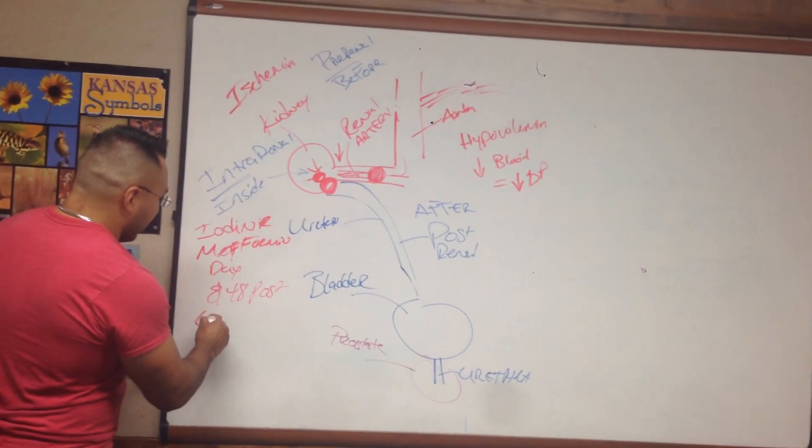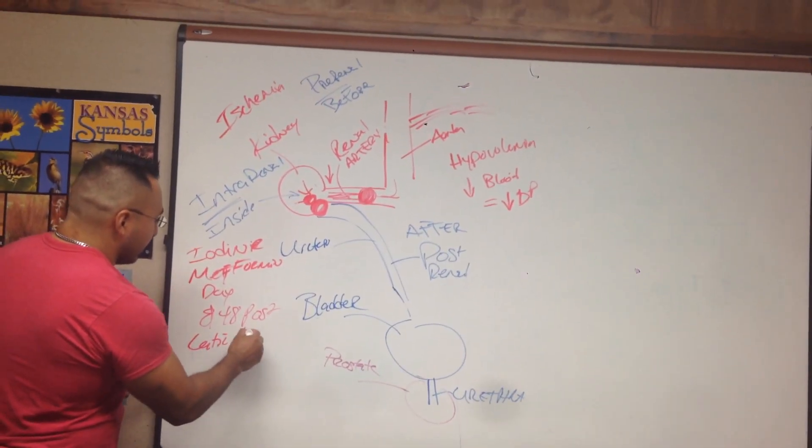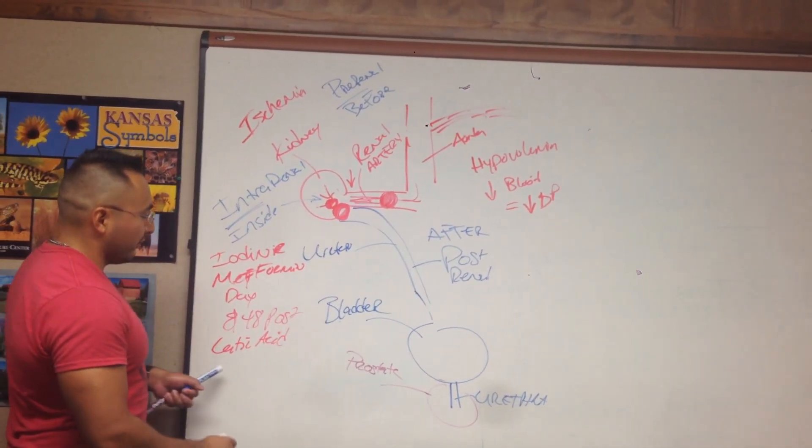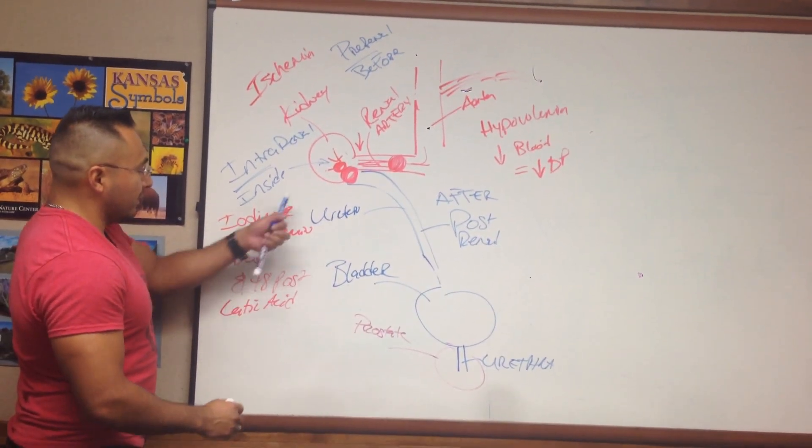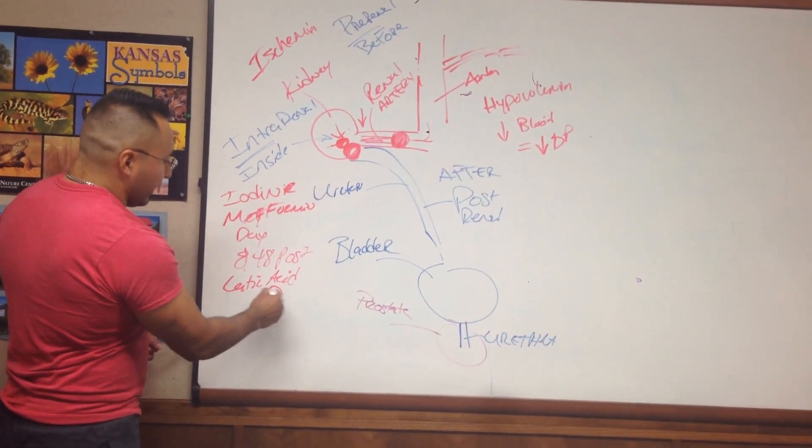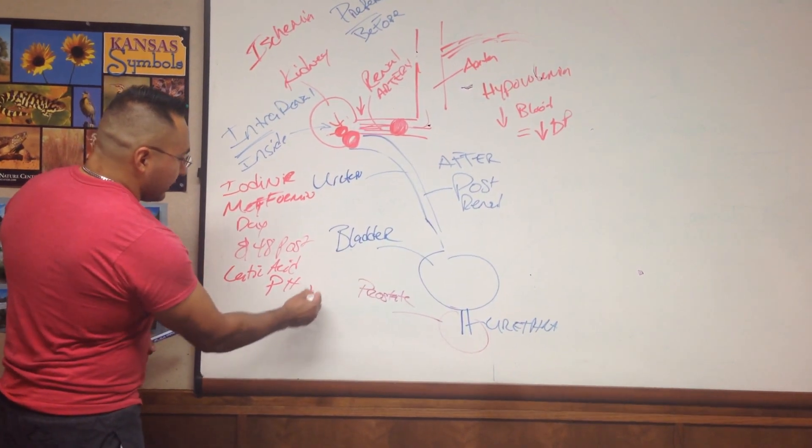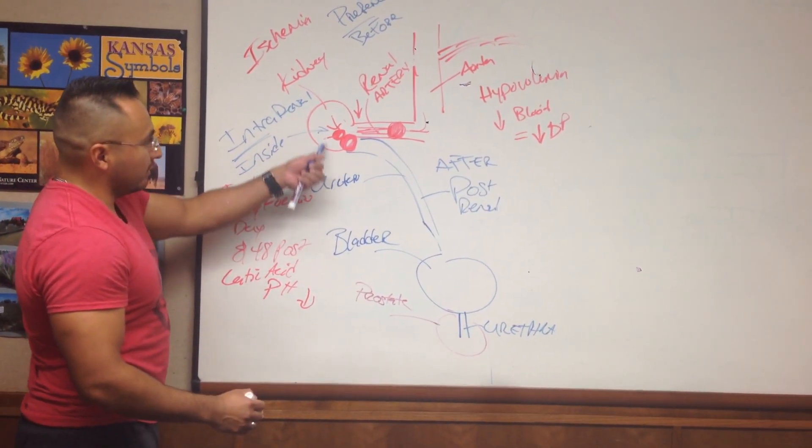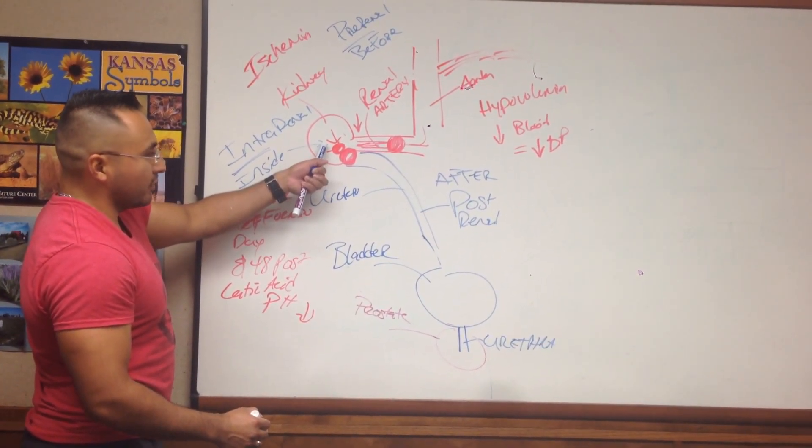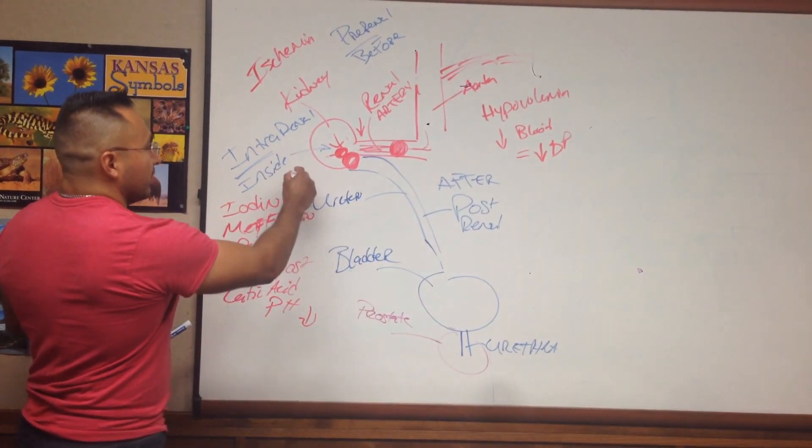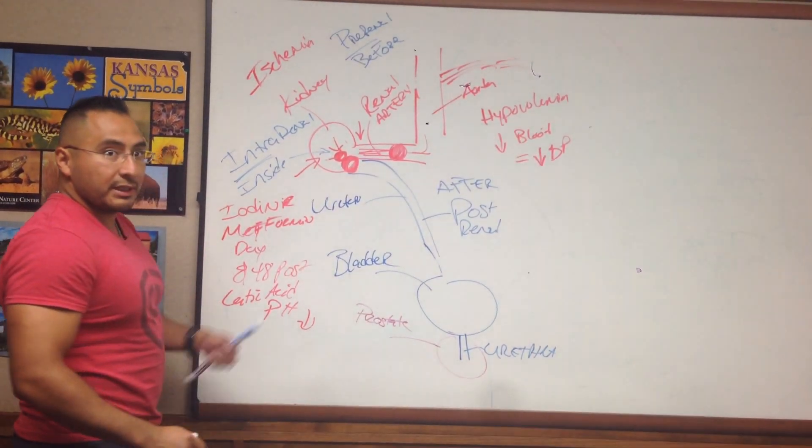Okay, now remember this has to do with lactic acid production. So if you have an accumulation of lactic acid, then it's also going to affect your pH. And your pH will decrease causing the urine to be more acidotic, which would cause intra-renal failure that's inside the kidney.